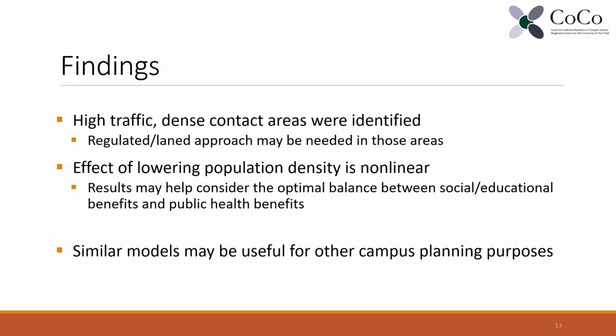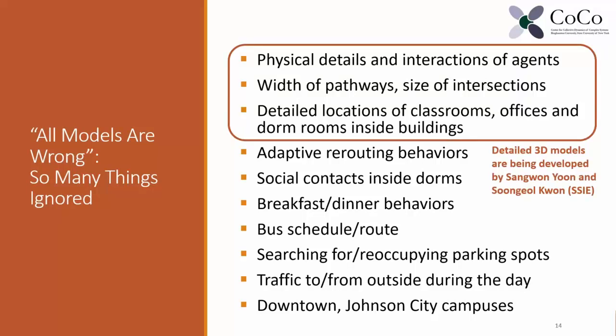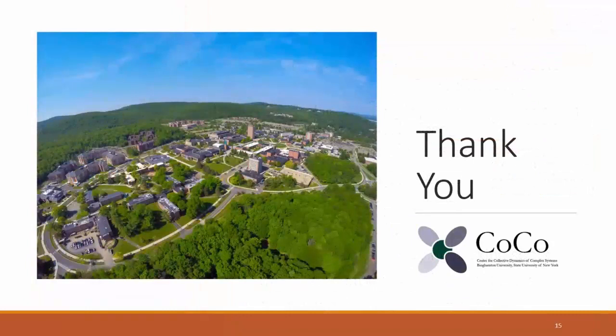To summarize, this project produced several findings. First, we identified high-traffic, high-density contact areas on campus, where more resources are needed to create regulated flow and behavior control measures. We also conducted systematic simulations to study the effect of lowering population density and found that the effect is nonlinear. By exploiting this nonlinearity, we may find the sweet spot of campus population density that is most efficient from a cost-benefit perspective and able to suppress disease spread. While this is a highly stylized model with many details ignored, we believe the main results are fairly robust and useful for decision-making. Thank you very much — please feel free to contact us with any questions.